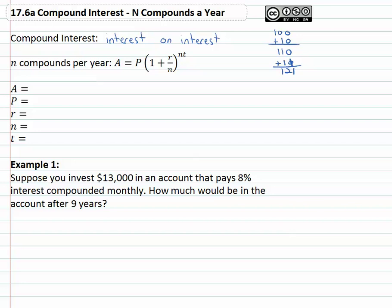And the way we can calculate what's happening with this compound interest, as we look at the formula, which I'm going to give to you is A equals P times one plus r over n to the nt power.